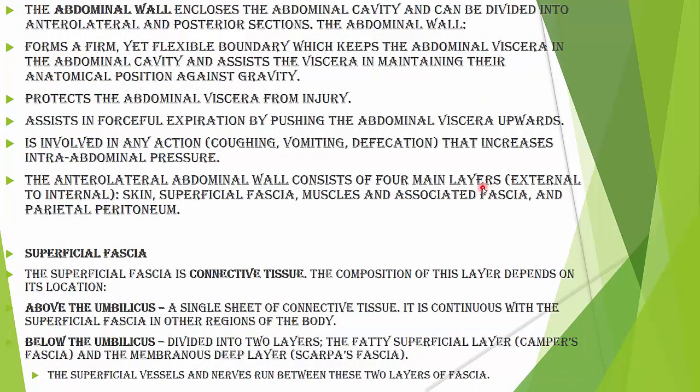The abdominal wall encloses the abdominal cavity and is divided into anterior, lateral, and posterior sections. Its function is to form a firm, flexible boundary which keeps the abdominal viscera in the abdominal cavity and assists the viscera in maintaining their anatomical position against gravity. It protects the abdominal viscera from injury and assists in forceful expiration by pushing the abdominal viscera upward, and is involved in actions like coughing, vomiting, and defecation that increase intra-abdominal pressure.